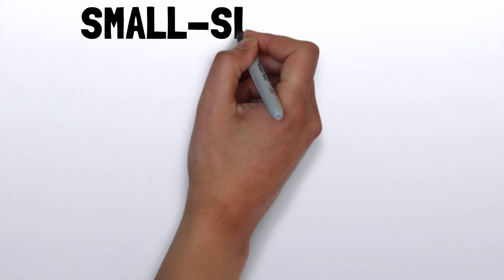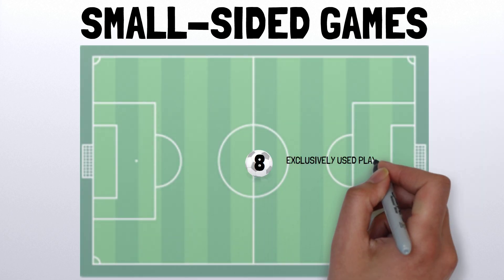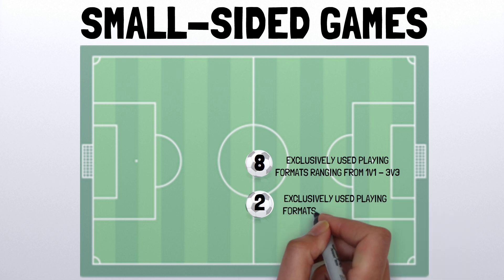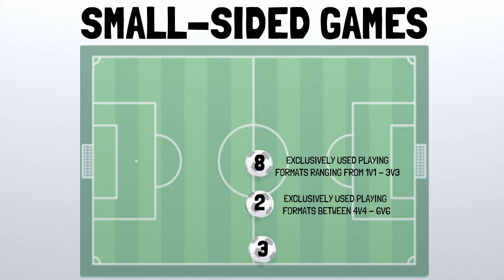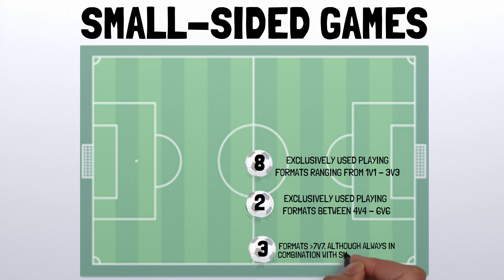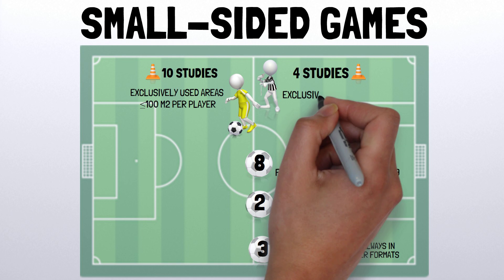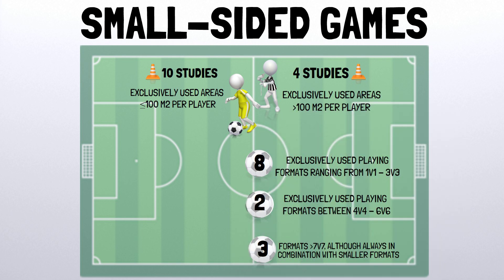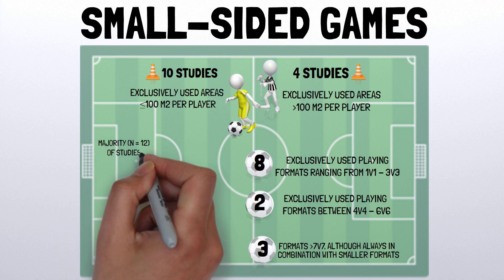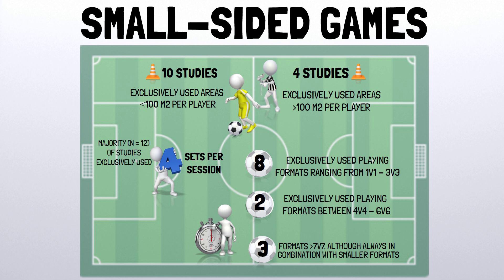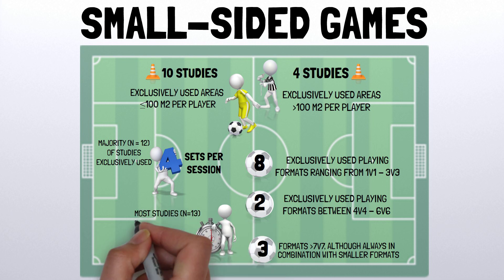For studies using small-sided games, 8 studies exclusively used formats ranging from 1v1 to 3v3, while 2 studies used formats between 4v4 and 6v6. Three studies employed combinations including formats larger than 7v7. Ten studies used areas equal to or below 100m² per player, while 4 used areas above that. Most studies involved 4 or fewer sets per session, with work durations per set ranging between 45 seconds and 8 minutes, with most using 4 minutes or less.